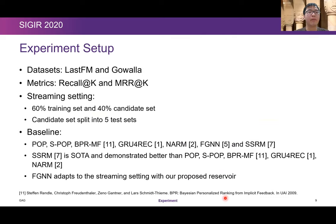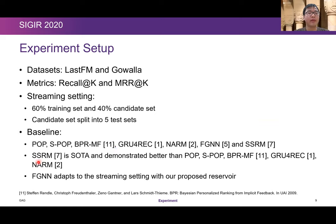For the experiment setup, we use two benchmark datasets: LASTFM and Gowalla. For metrics, we use Recall@K and MRR@K. To simulate the streaming setting, we split the dataset into a training set and a candidate set, and the candidate set is further split into five test sets. We provide these five test sets to our model gradually to simulate the streaming situation. Our baselines include SSRM, which is the current state-of-the-art method, and FGNN, a recently proposed session-based recommendation method which we adapt to the streaming setting using our proposed reservoir.